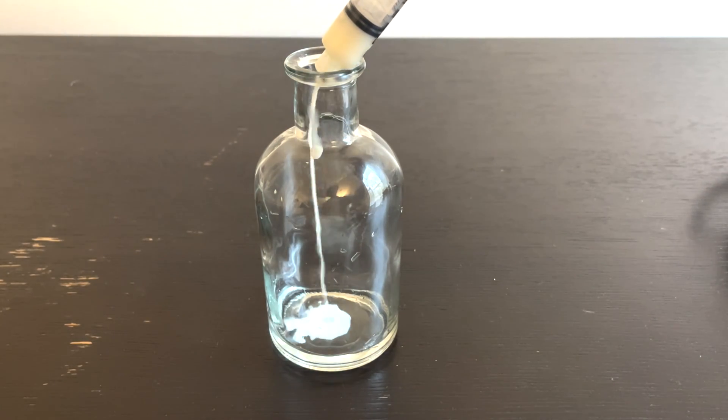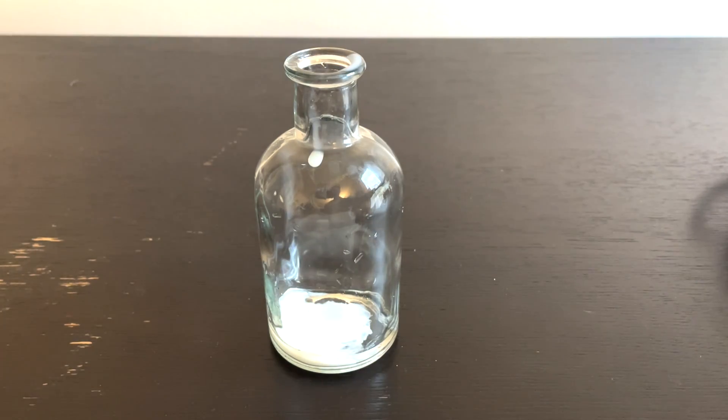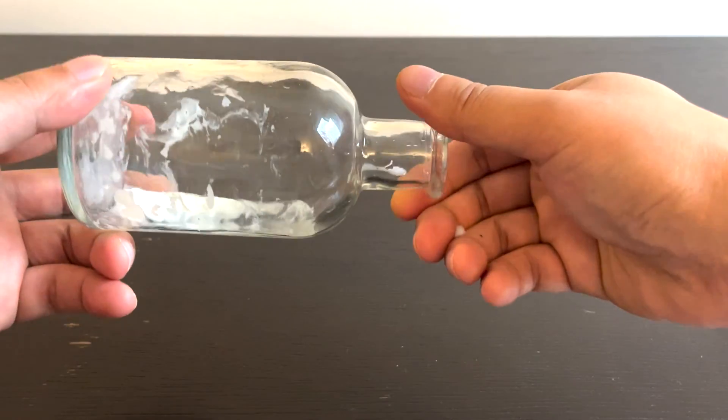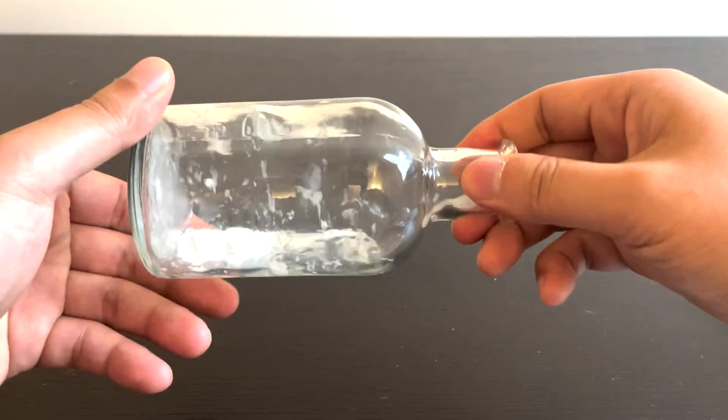Now milk will be injected into the bottle which can represent dairy ingestion. Watch what happens when the bottle is rotated around, forcing an interaction between the milk and the white vinegar. Thickened mucus forms which adheres to the sides.